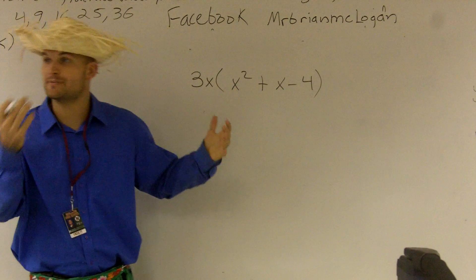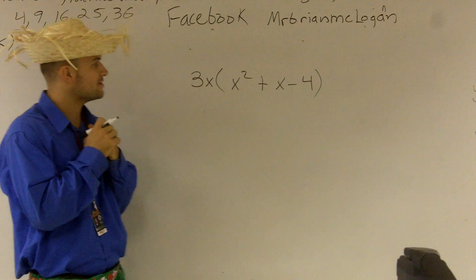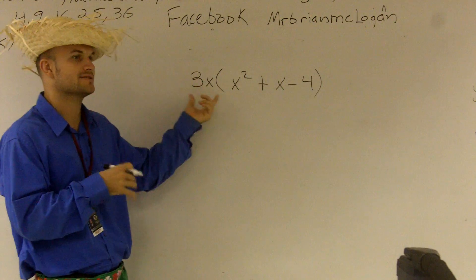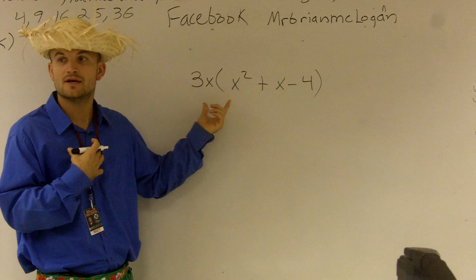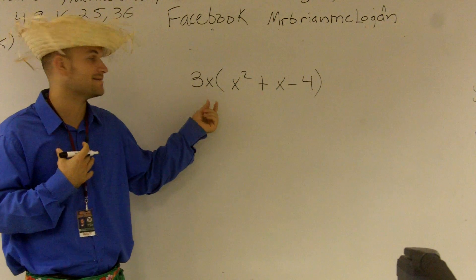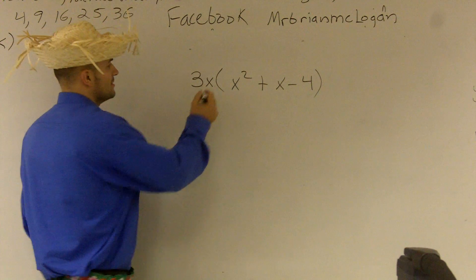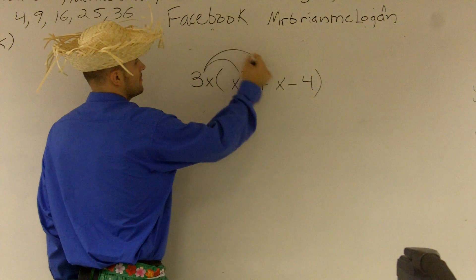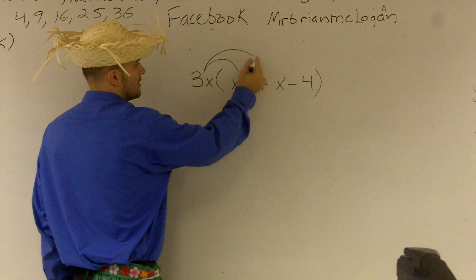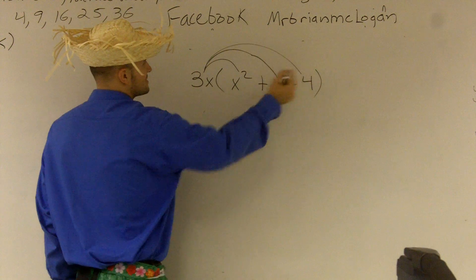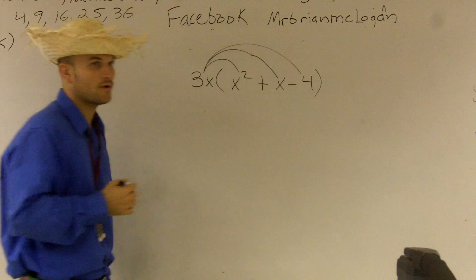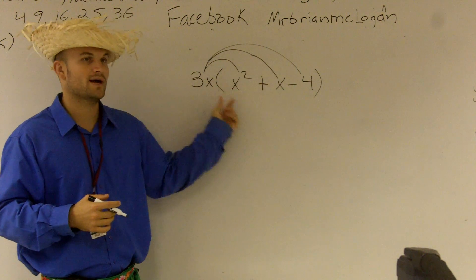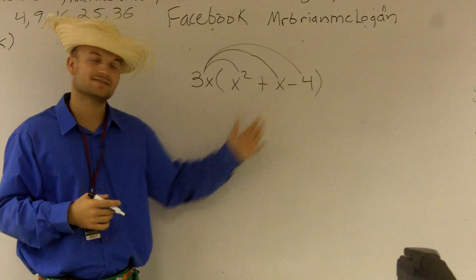What we're going to do is work on this derivative property. For this problem, you need to make sure that whenever we have a number outside of parentheses, we're going to multiply that number times everything inside the parentheses. So I'm going to multiply 3x times x squared, 3x times x, and then 3x times negative 4. Anytime you have anything outside of parentheses, you're multiplying it by everything inside.